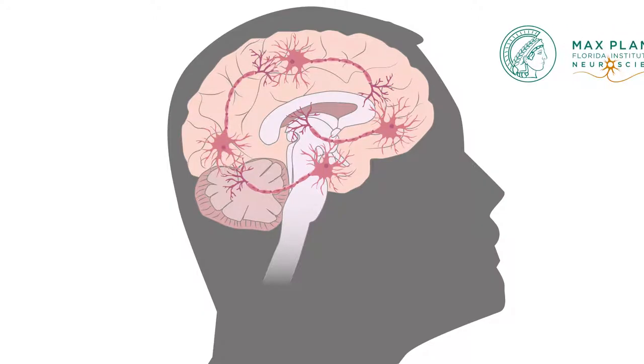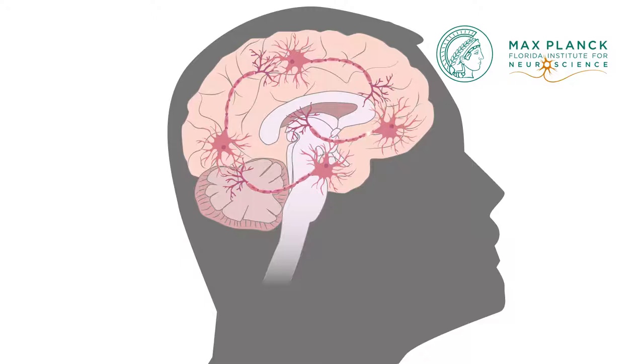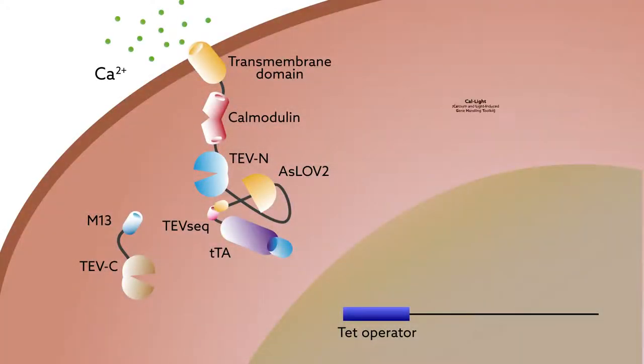Scientists at the Max Planck Florida Institute for Neuroscience recently built a new tool that does both. The system, called CalLite,